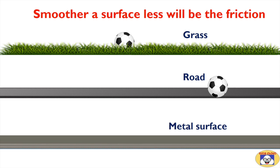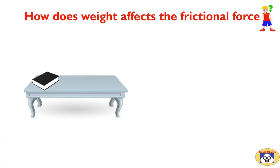A rough surface produces more friction than a smooth surface. Hence, grass will produce more force of friction — as a result, the ball will stop early on the grass. Metal has the smoothest surface among the three, so it will make less friction and the ball will go the longest distance. How does weight affect the frictional force?